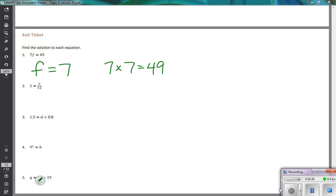The next one is 1 is equal to r divided by 12. So you have to think, what does r have to be to make it true? Some number divided by 12 is 1.